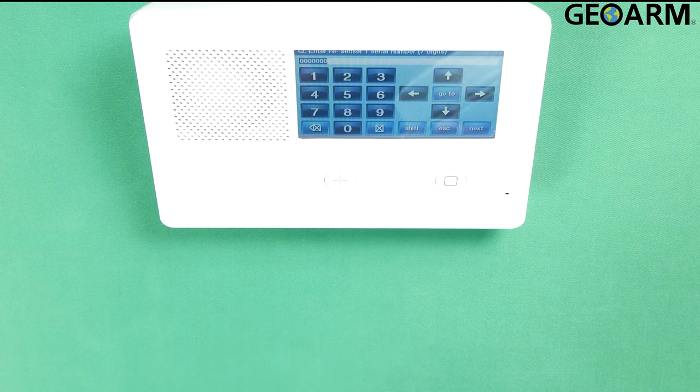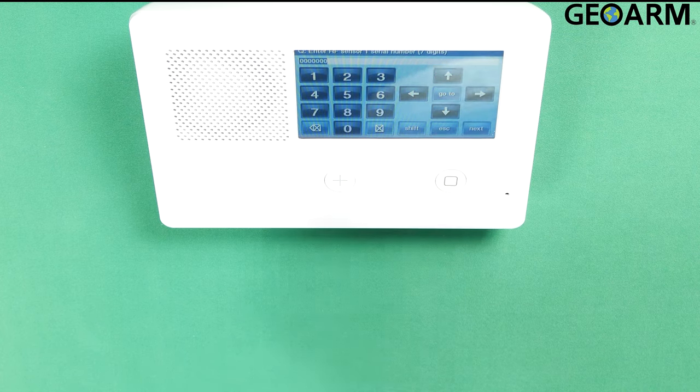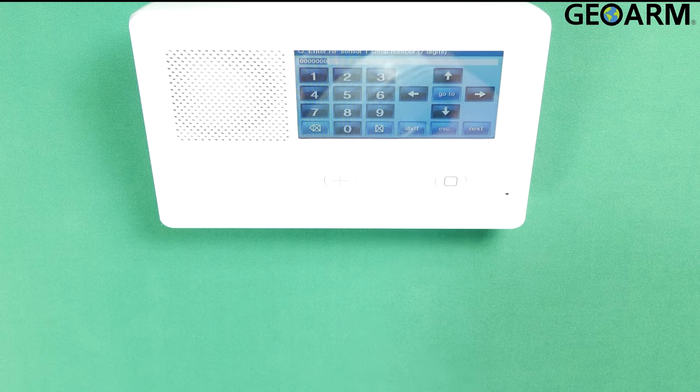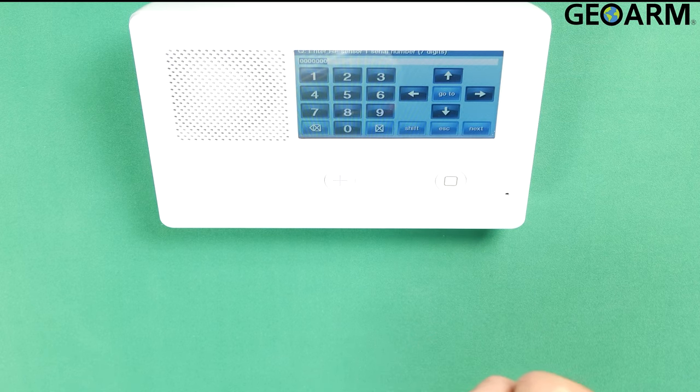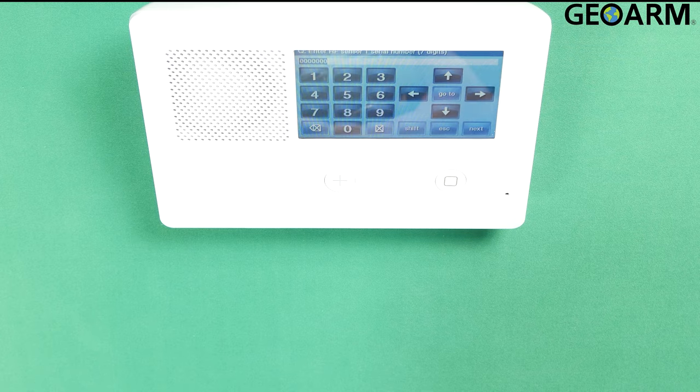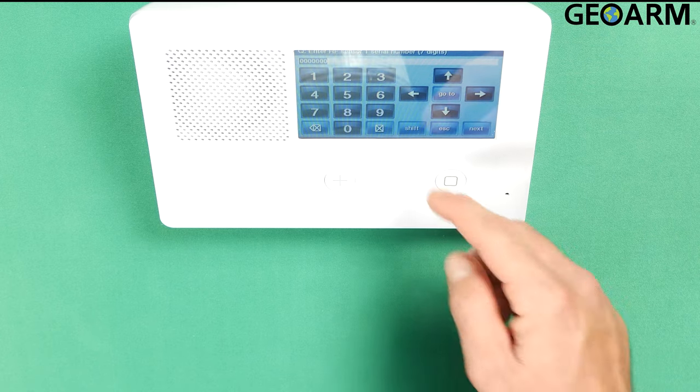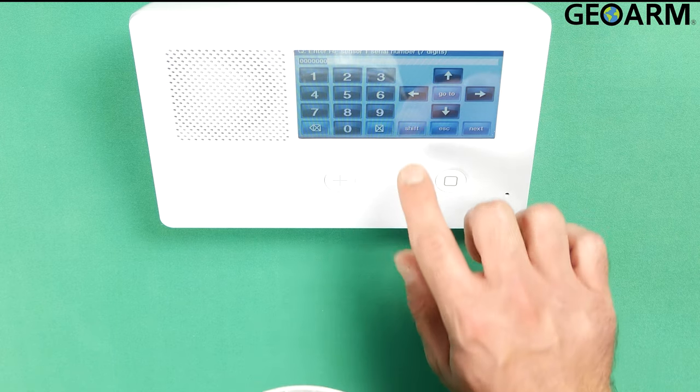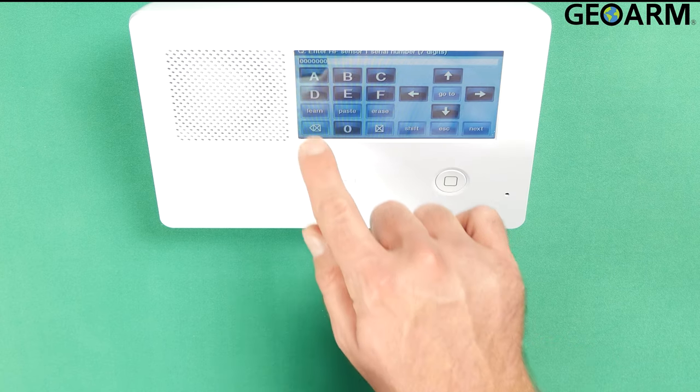Now it's going to ask you to learn your sensor in. It wants you to actually enter the TX ID. I don't advise you to do it like that. I advise that you learn it in so that your panel recognizes it and you can see that it's playing nice with one another. So in this case we're going to hit shift and then we're going to hit learn.